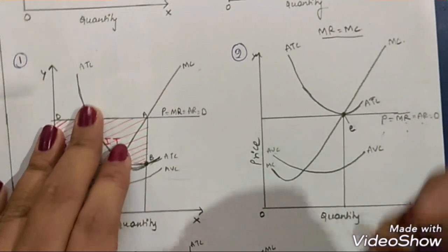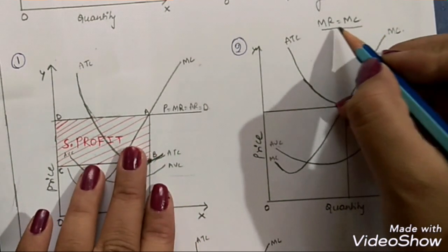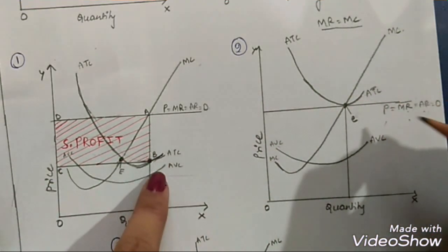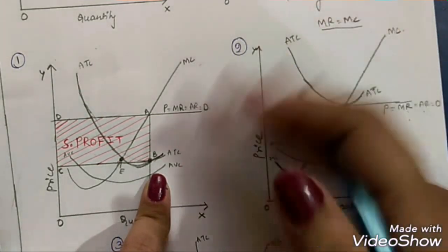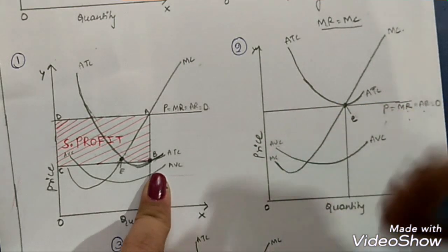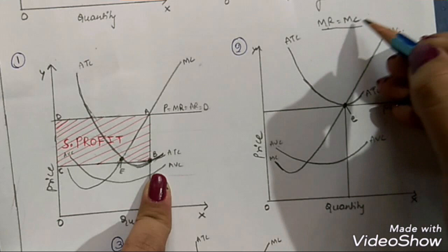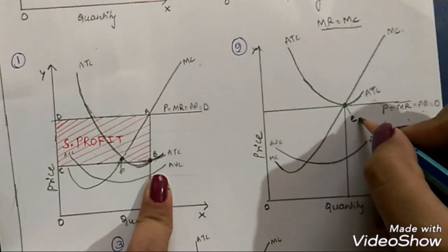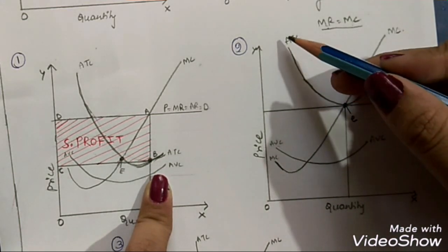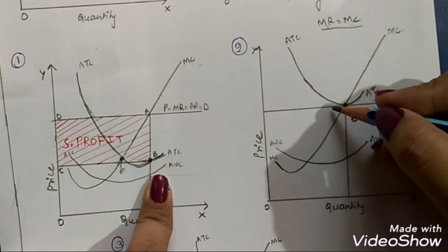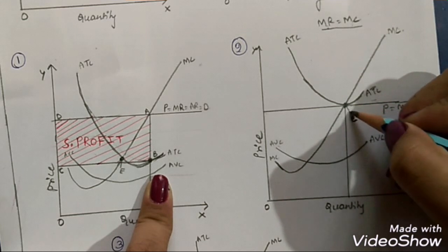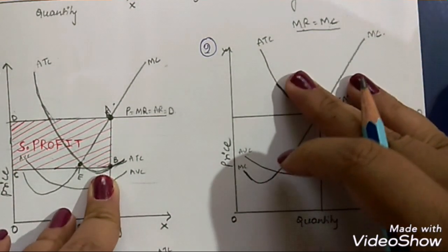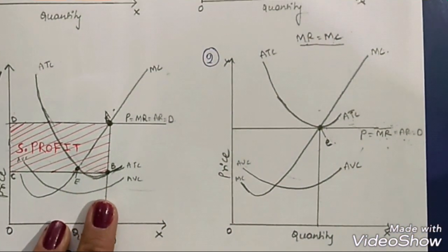The condition for profit maximization is that MR must be equal to MC. This is the MC curve and this is the MR line. Price, MR, AR, and the demand curve are all the same in this market situation — that is a very important point to remember. The point where MR equals MC, where MC and MR intersect, is the equilibrium point or break-even point. Where the average total cost also intersects the price line, the firm earns normal profit, because average total cost equals the price line.